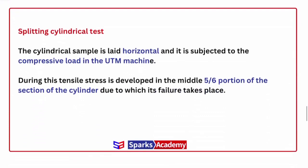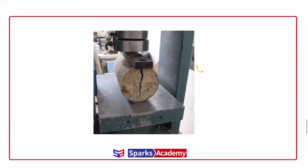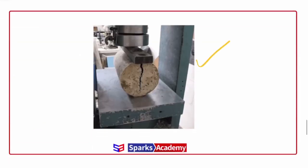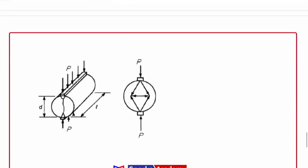Next is the splitting cylinder test. In this test, the specimen is placed horizontally in the machine — same as the UDM machine used for cube strength — and the load is applied horizontally. The tensile stress builds up in the middle portion, specifically the 5/6th portion of the middle experiences tensile stress. The final tensile strength formula is: tensile strength equals 2P divided by π×D×L.